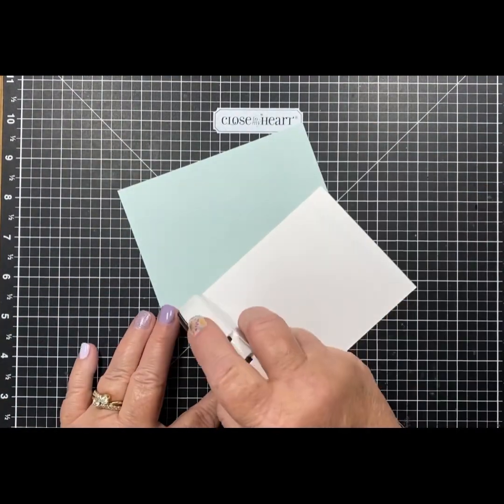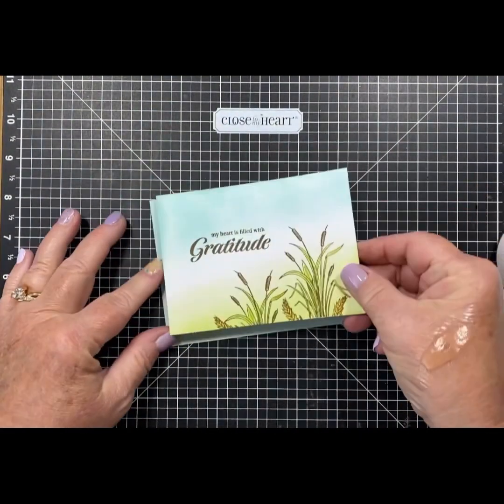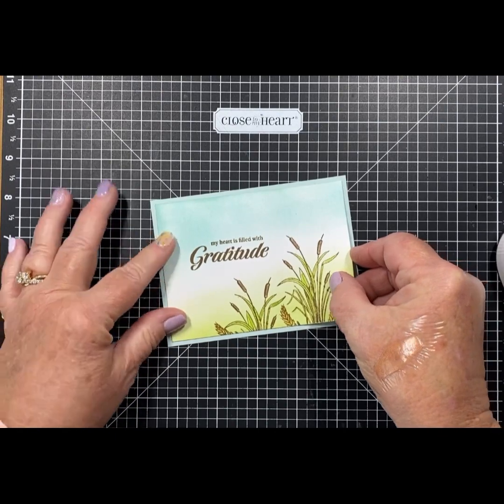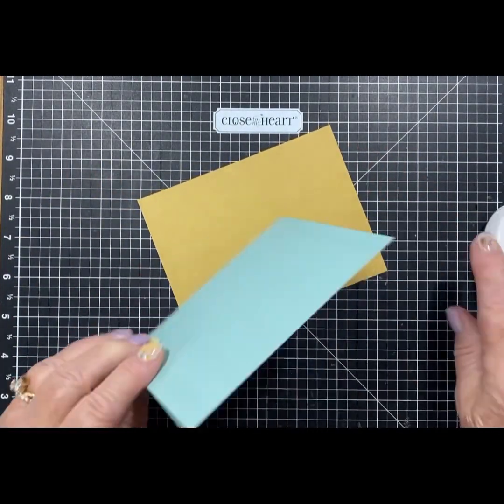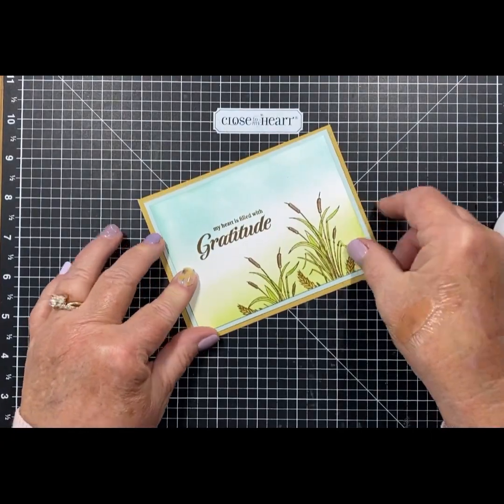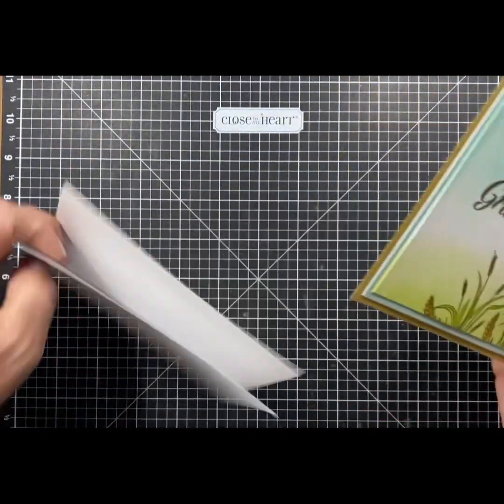So now it's time to put it together. I'm using our Close to My Heart tape runner, which is now refillable, and I'm mounting that front of the card on Glacier cardstock and then onto Acorn, one of our new colors. I'll put that on the card base.